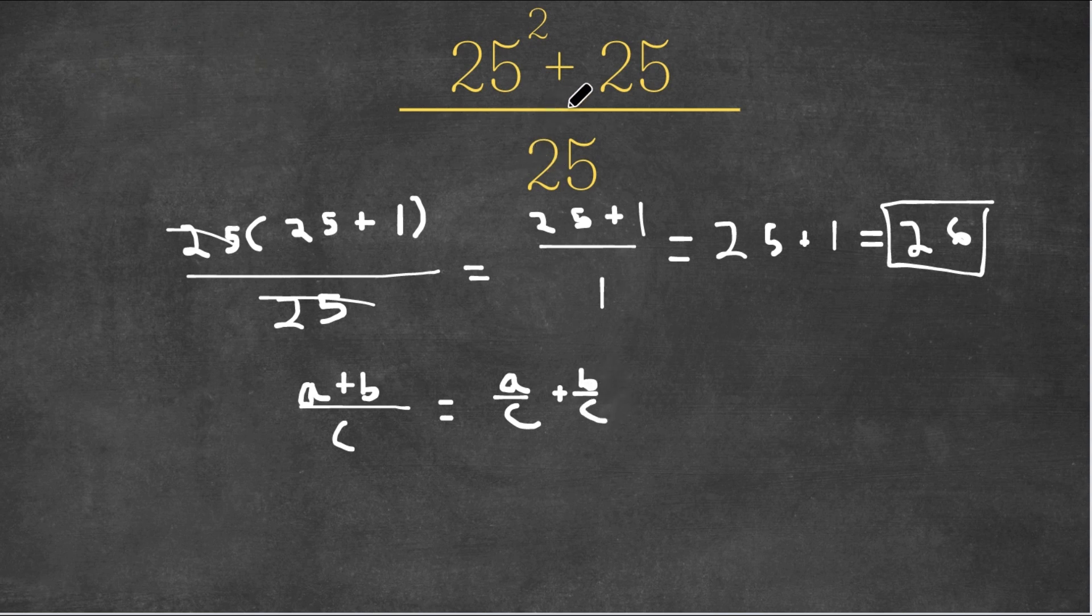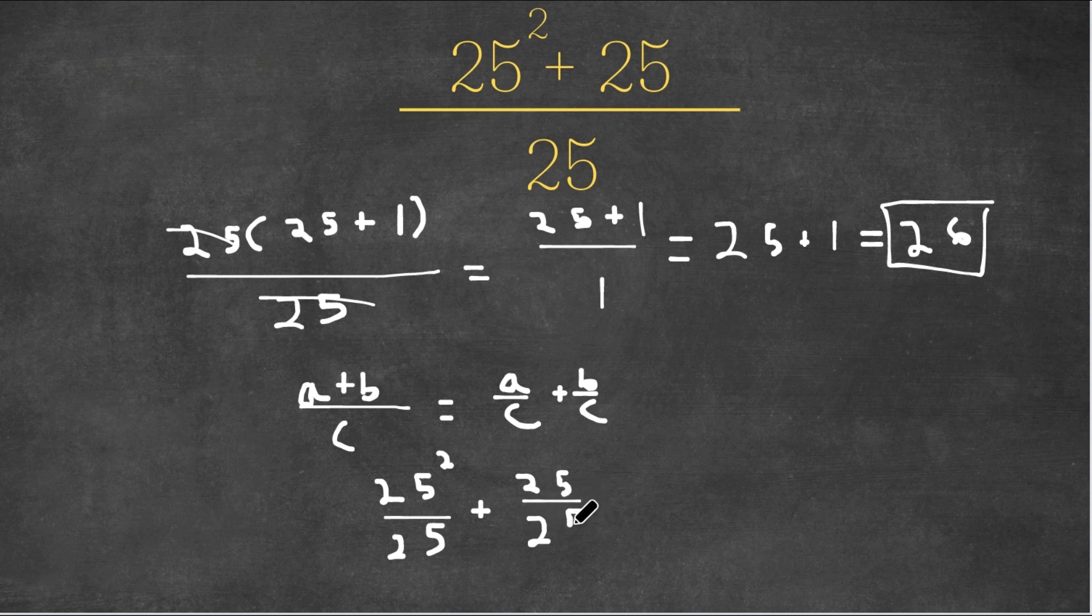So right here, we have 25 squared plus 25 over 25. This is the same thing as 25 squared over 25 plus 25 over 25, because 25 squared would be a, 25 would be b, and 25 would be c.